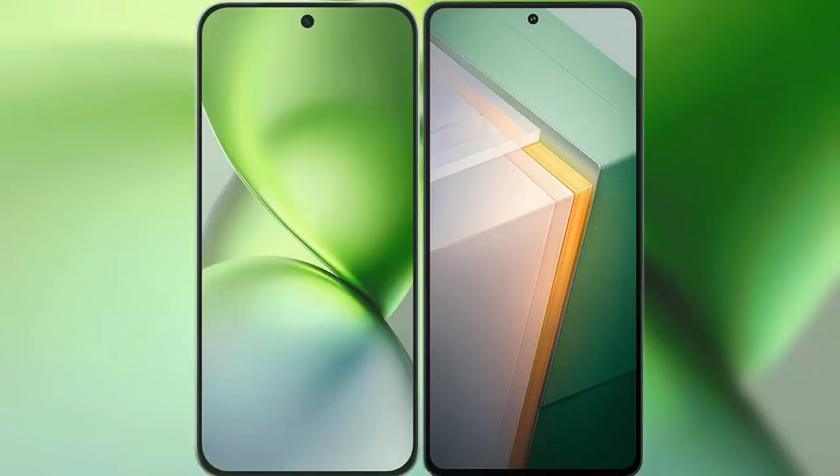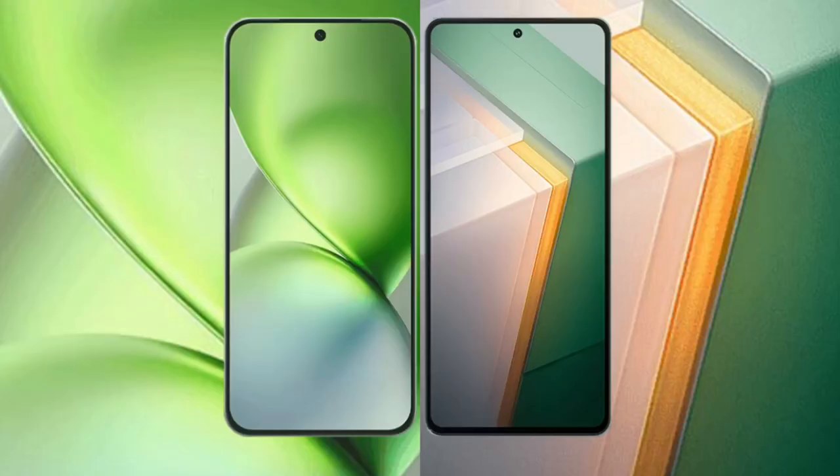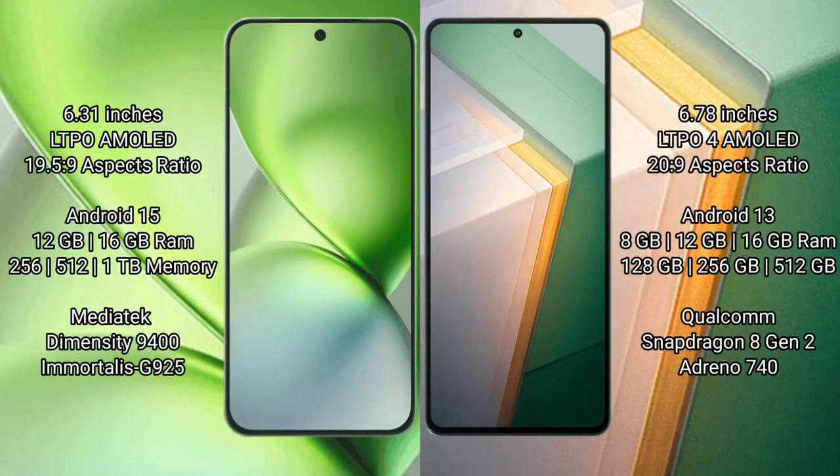I will compare the new Vivo X200 Pro Mini with Vivo iQOO 11. Vivo X200 Pro Mini has a 6.31 inches LTPO AMOLED display with an aspect ratio of 19.5:9. Vivo iQOO 11 has a 6.78 inches LTPO AMOLED display with an aspect ratio of 20:9.